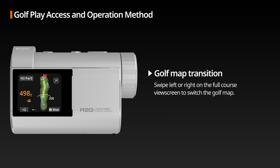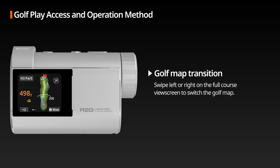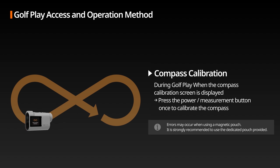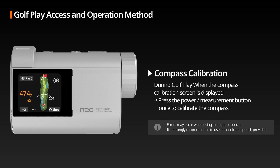Switching to Golf Map: When in the full course view screen, swiping left or right will switch to the surrounding golf map view. Compass Calibration: If the compass calibration screen appears during golf play, press the mode measurement button once, then move it in the same pattern as shown on the screen to calibrate the compass. Once calibration is complete, the guidance screen will disappear automatically.